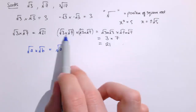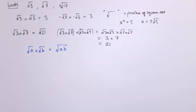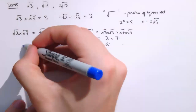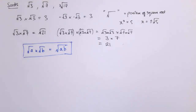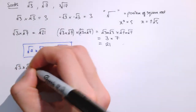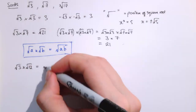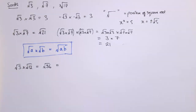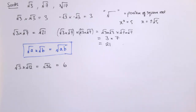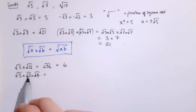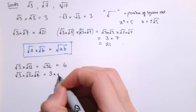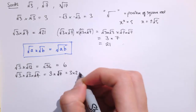Root 3 times root 7 is a number that when multiplied by itself gives 3 times 7, so it's the square root of 21. We can use this rule in many ways. For example, the square root of 3 times the square root of 12 equals the square root of 36, which is just 6. Alternatively, rewriting root 12 as root 3 times root 4 gives root 3 times root 3, which is 3, times root 4, which is 2 — so 3 times 2 equals 6.